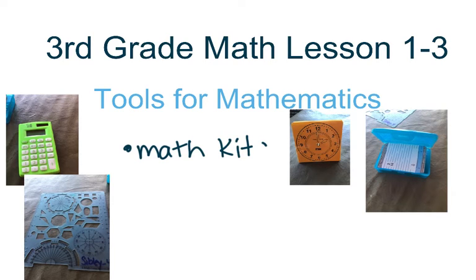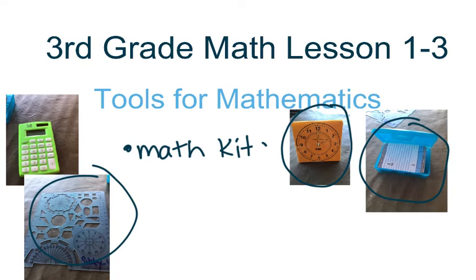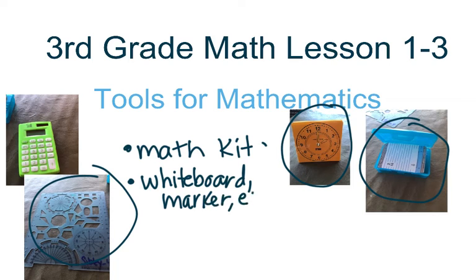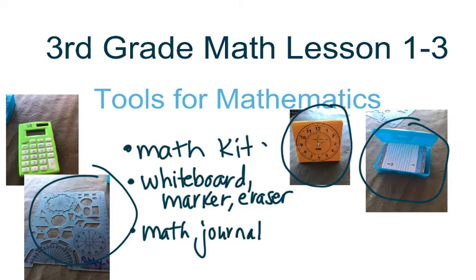Within that math kit, you have the following materials you need to get out. They would include a calculator, a template that allows you to trace things, a clock, a deck of cards in a soap container, your whiteboard, whiteboard marker, and an eraser. You'll also need your math journal and your pencil.